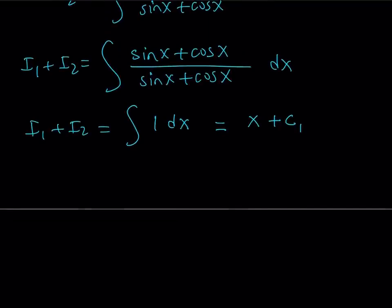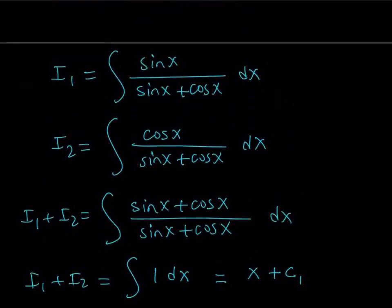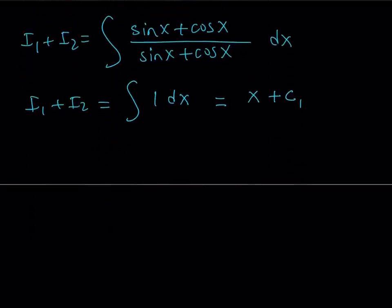So now we have this I1 plus I2, but I'm looking for I1, so where does this I2 come from? So I need to be able to find another equation with I1 and I2 so that I can solve for I1, because that's my goal. So how do I do that? If you look at I1 and I2 carefully, you're going to notice that I have sine x plus cosine x at the bottom. What is the derivative of sine x plus cosine x? And why am I saying that? You'll see in a little bit why I'm talking about the derivative of the denominator, but if you differentiate sine x plus cosine x, you get cosine x minus sine x. Does that tell you something? Yes, it should. So now what we're going to do is, we're going to subtract I2 minus I1.